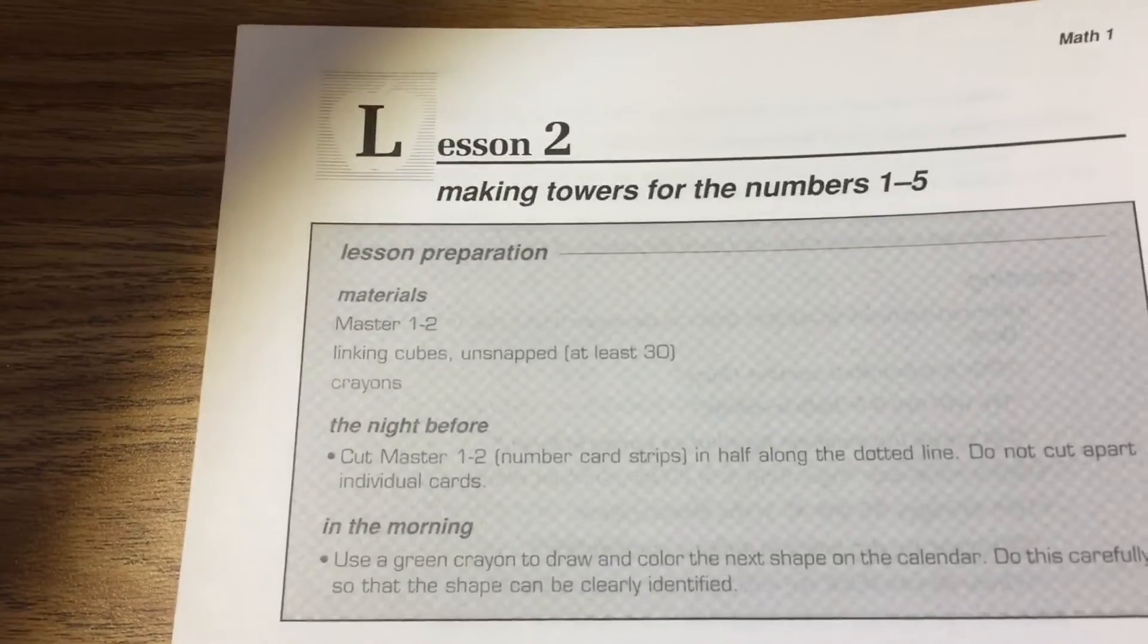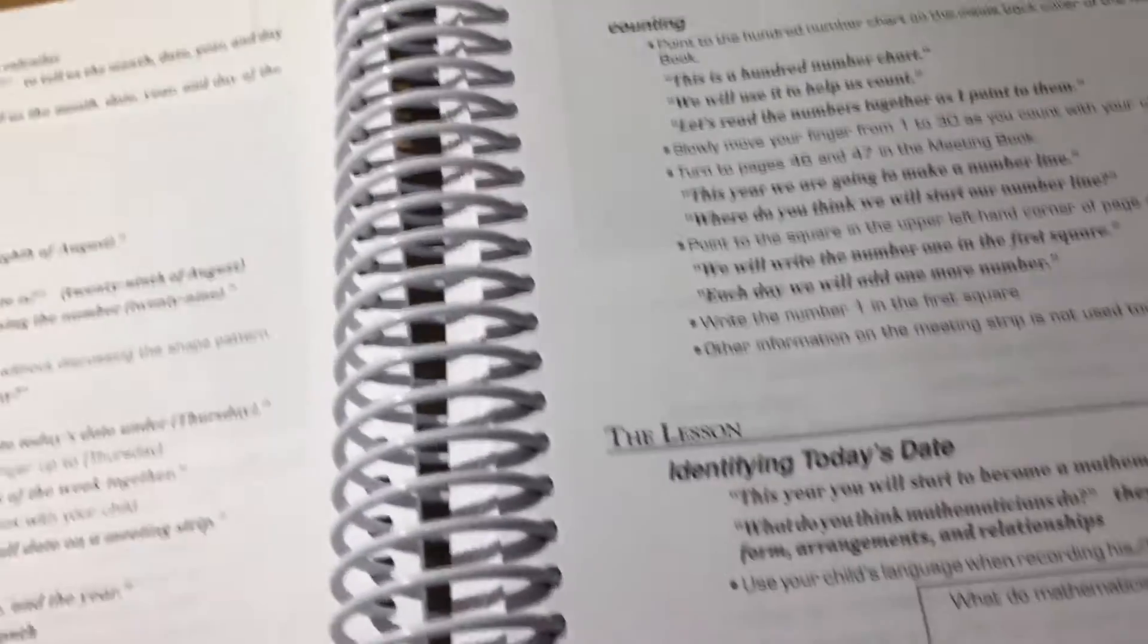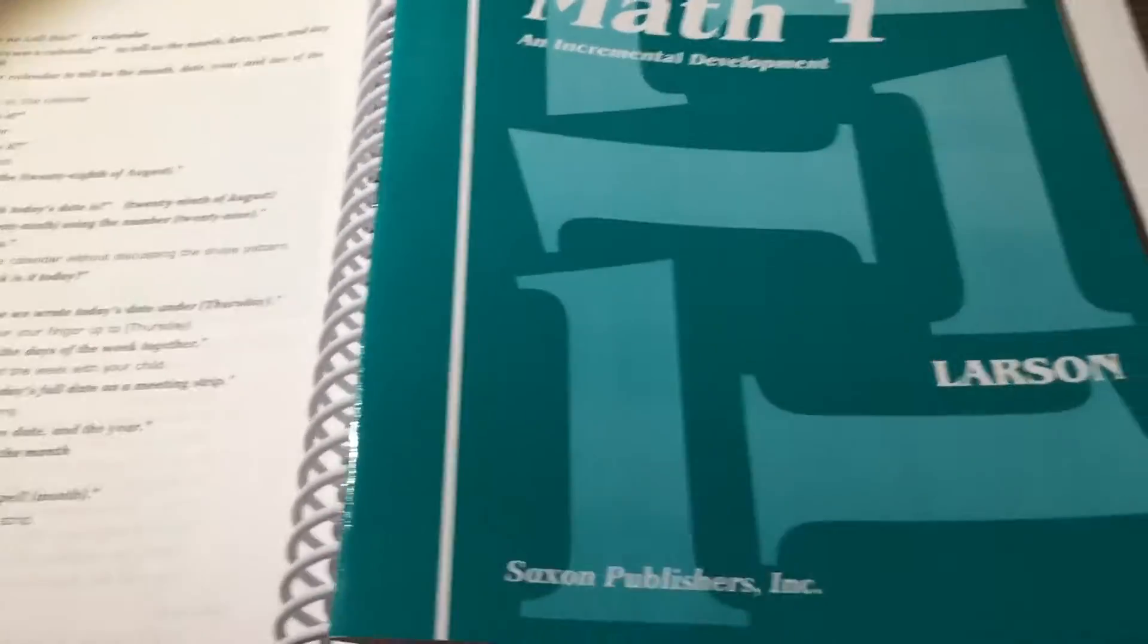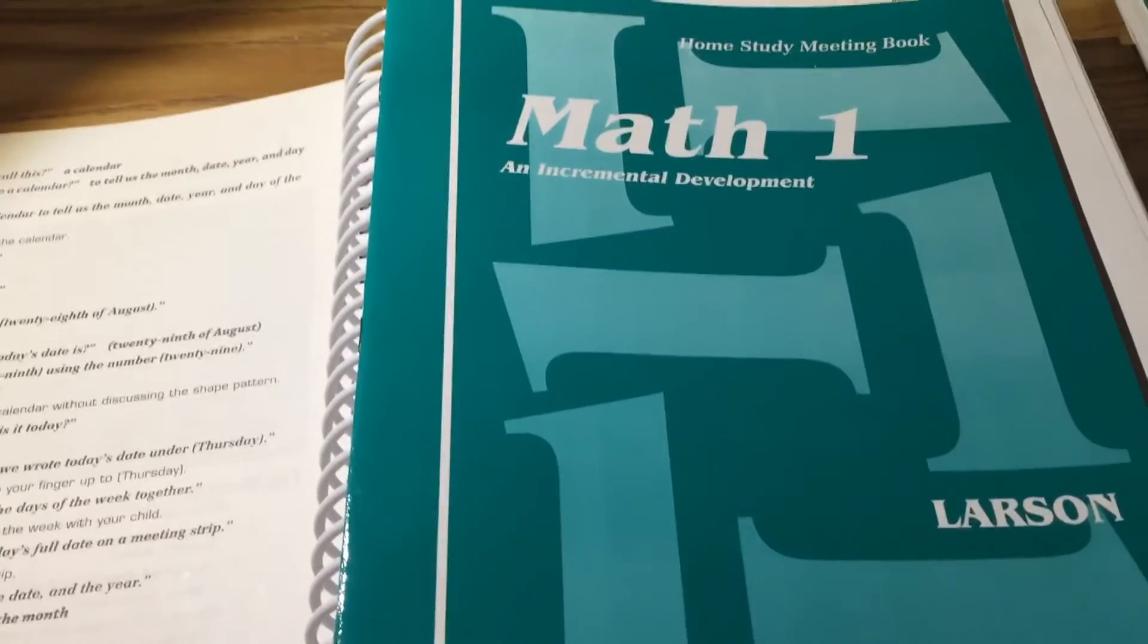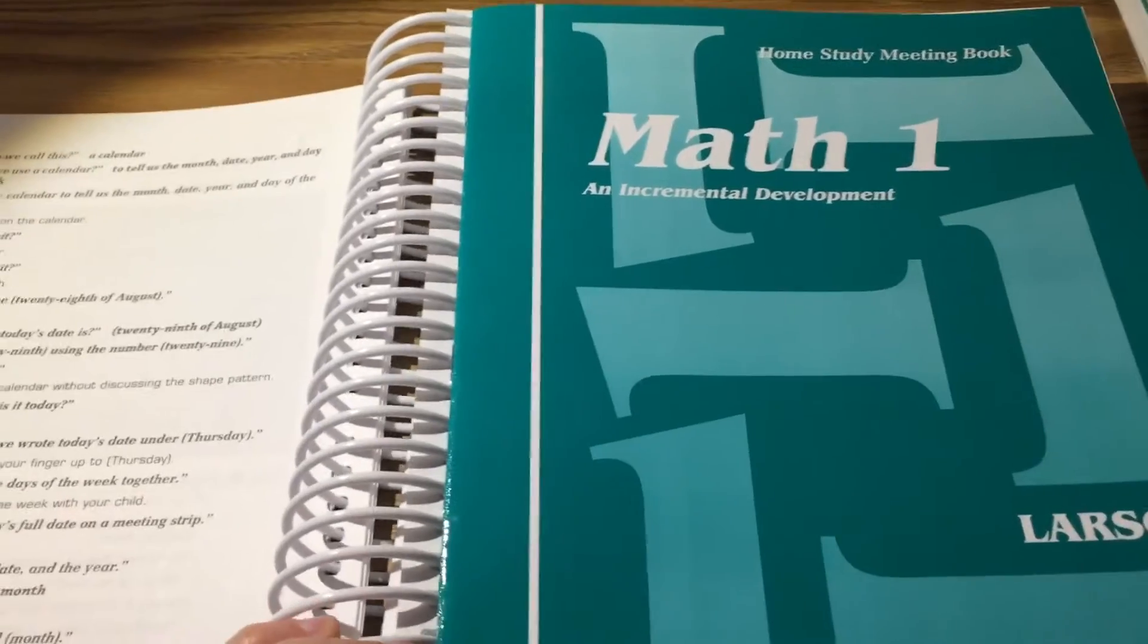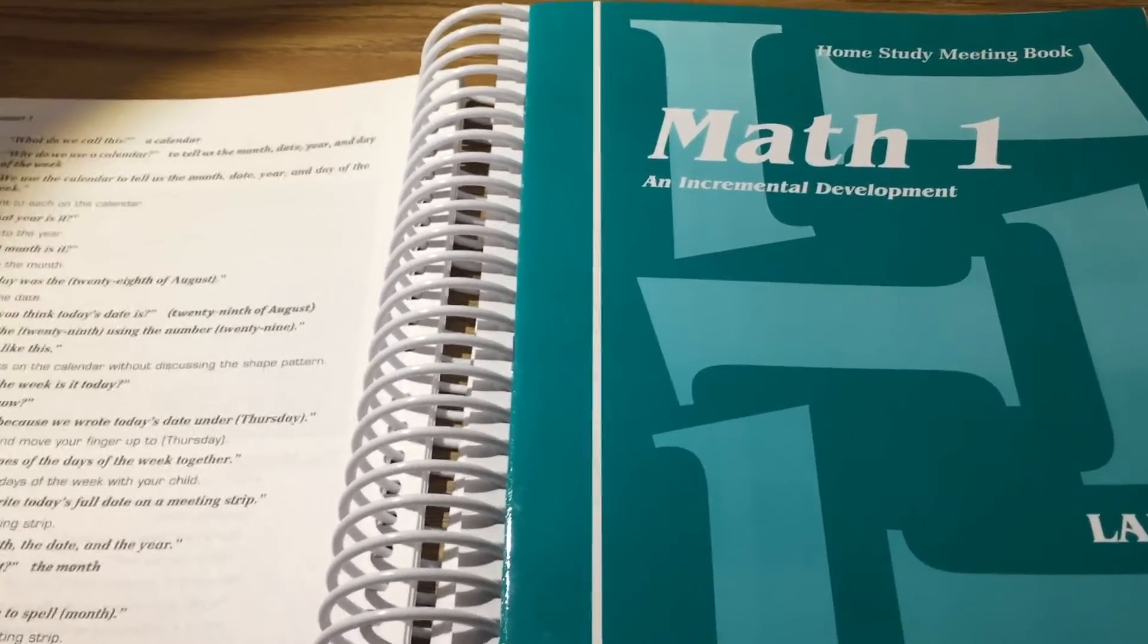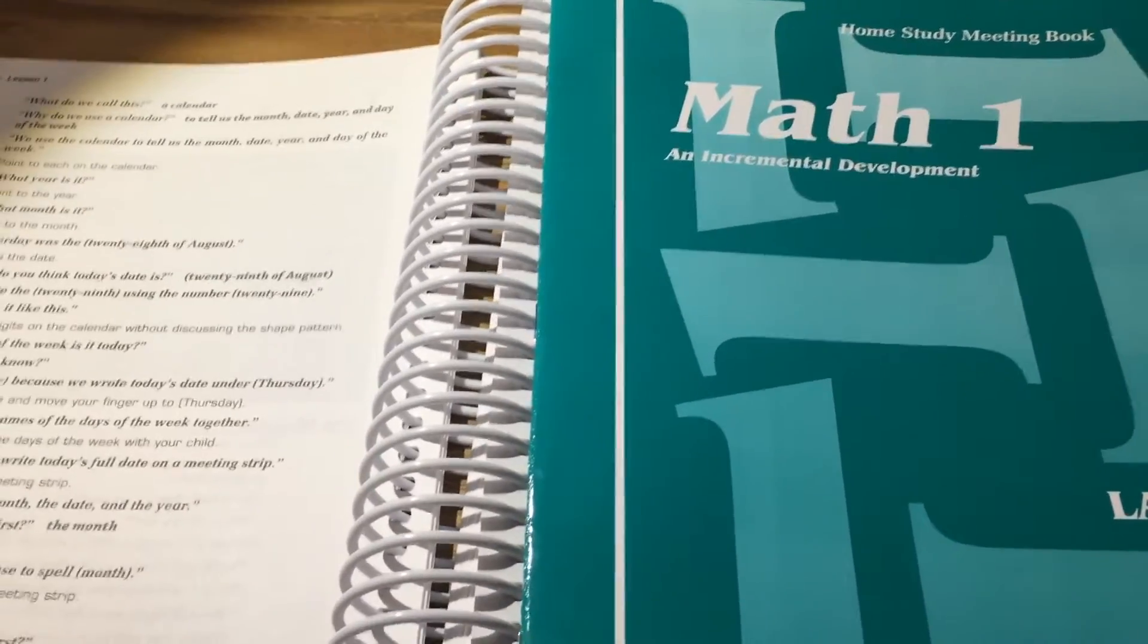Then it goes right into lesson two. So for lesson one it says to get out the home study meeting book which is this and I'll just give you a quick peek inside what it looks like. Now my children were going to be doing morning work that consists of the calendar, the date, the month, things like that. All that sort of thing and a little bit of math in it as well.